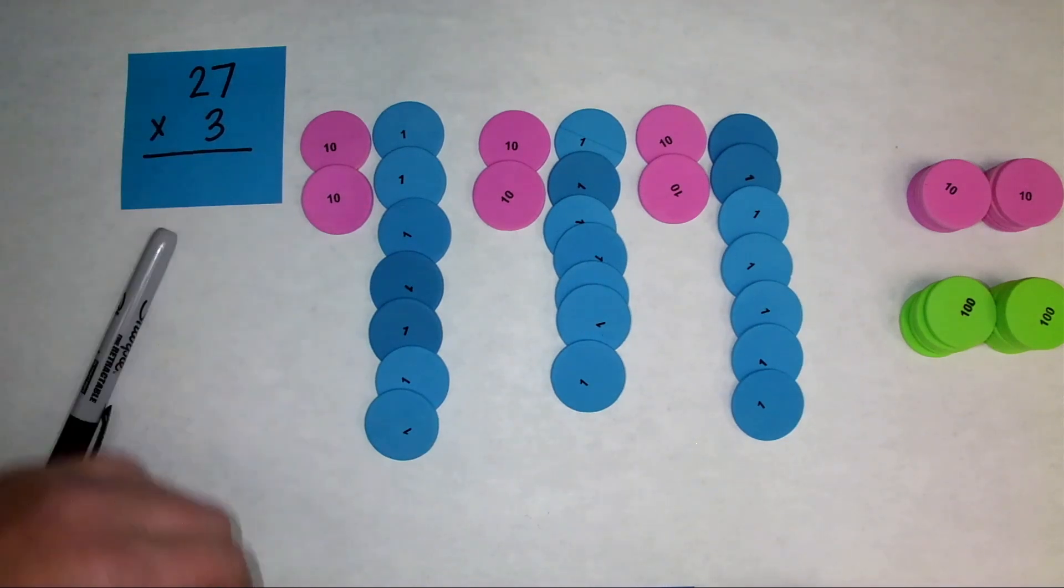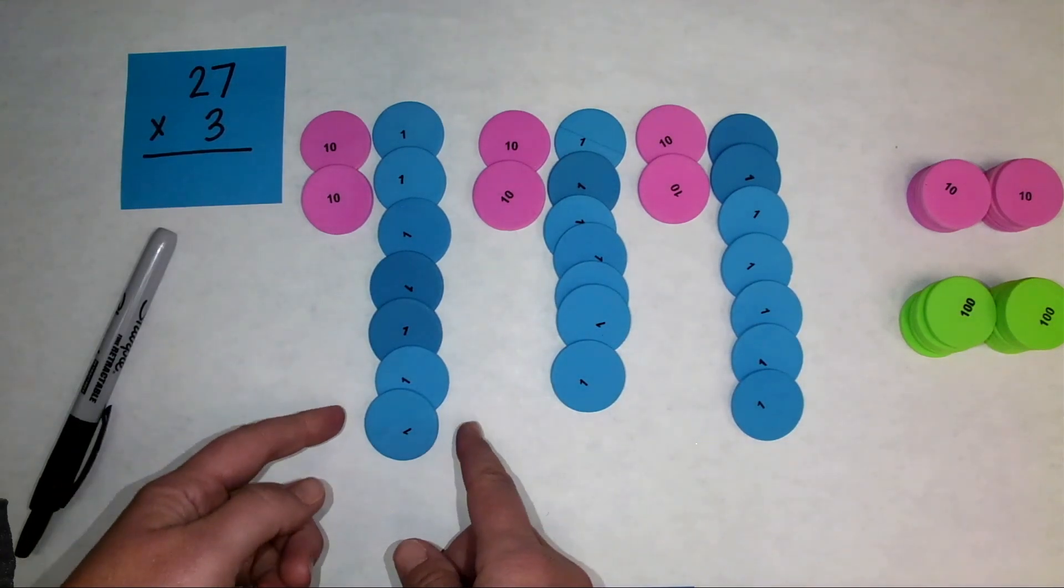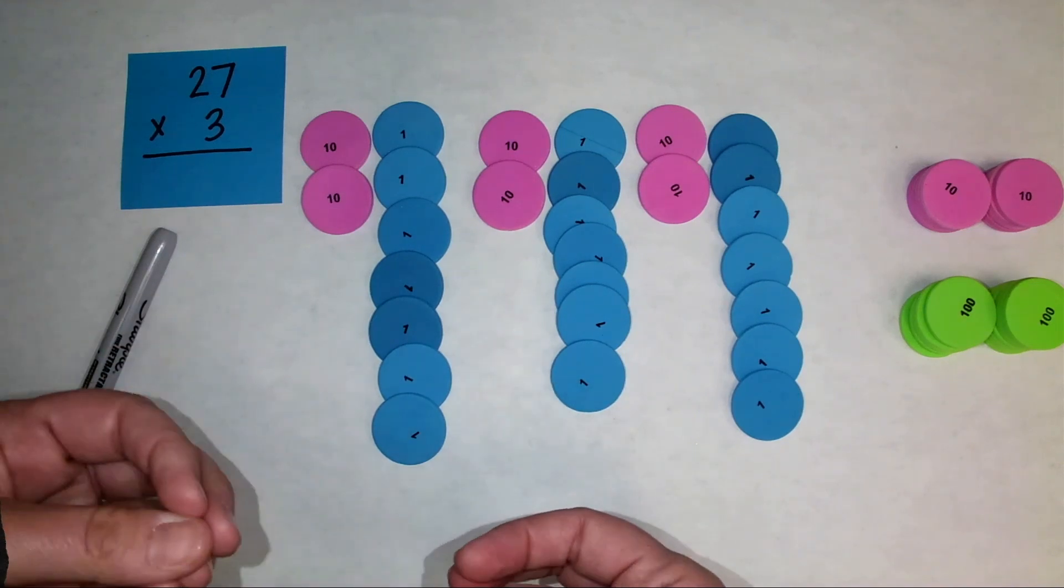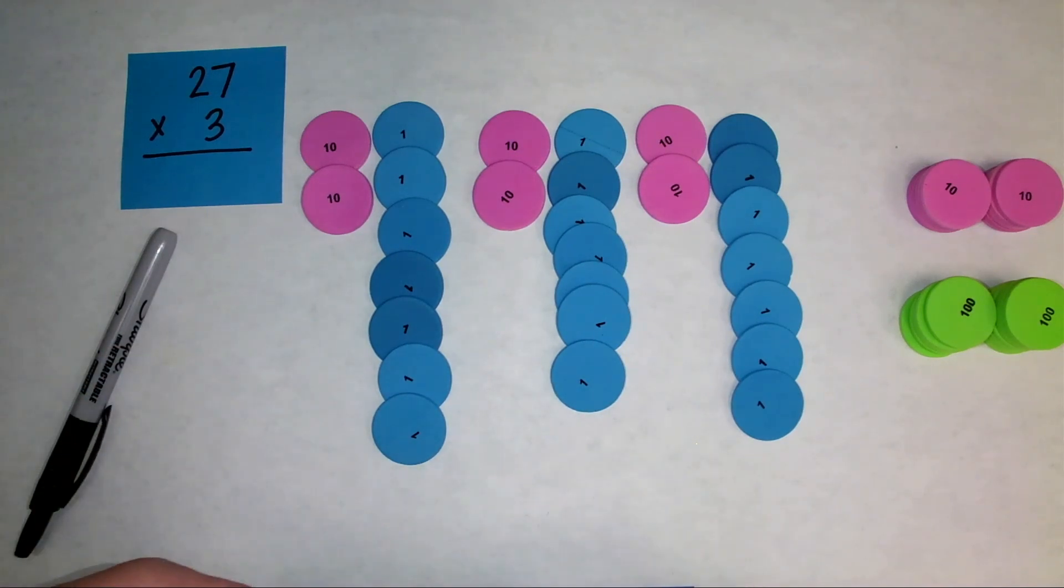So when we multiply, we're first going to multiply the ones. And so I'm going to put together all of the ones, and anytime I have nine or more ones, I'm going to regroup.